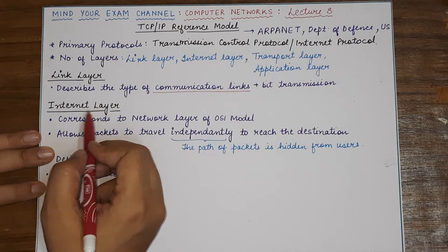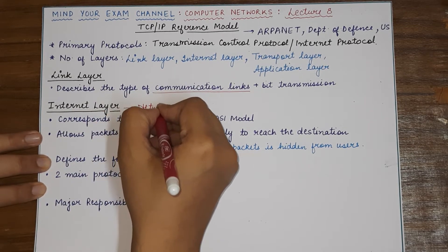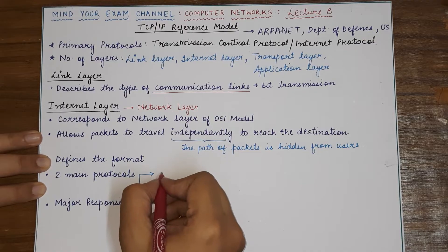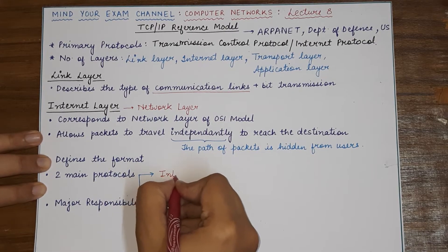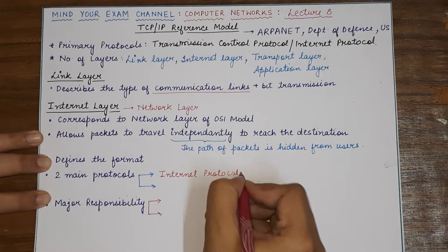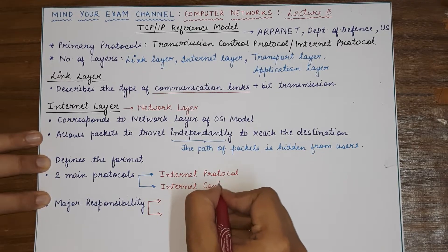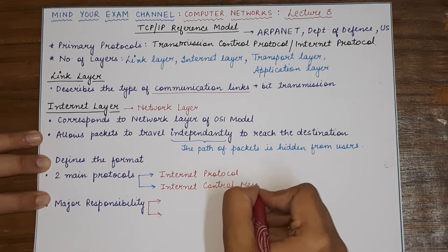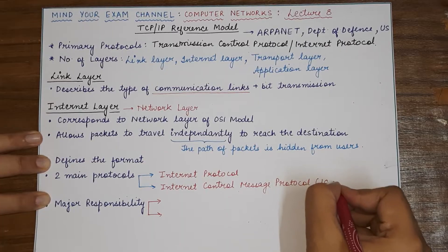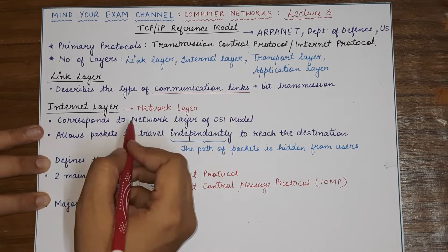The second layer is the internet layer, which is very similar to the network layer. It uses two major protocols: first is the Internet Protocol, which is IP, and the second is ICMP — the Internet Control Message Protocol. These are the two most important protocols utilized at the internet layer of the TCP/IP model.